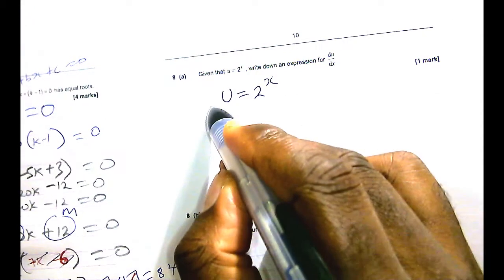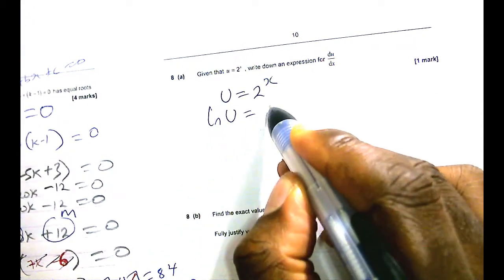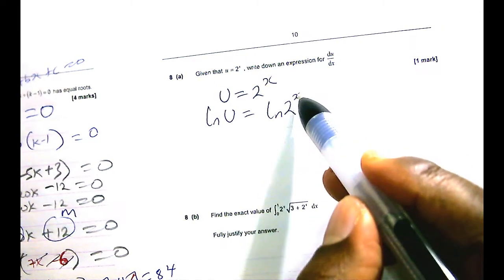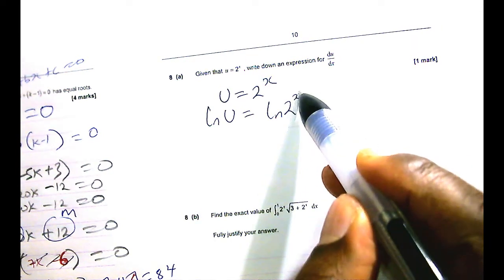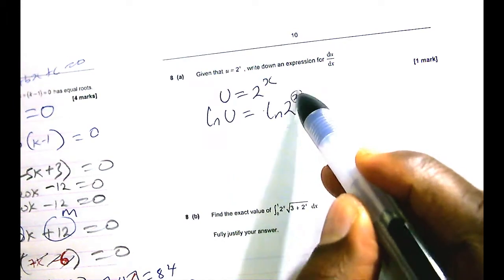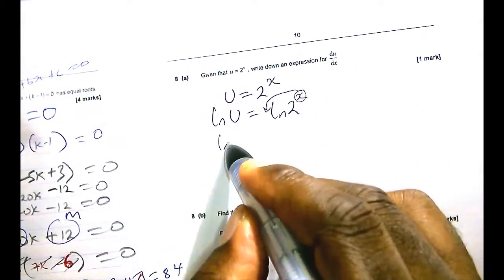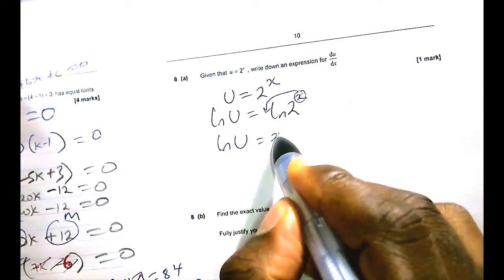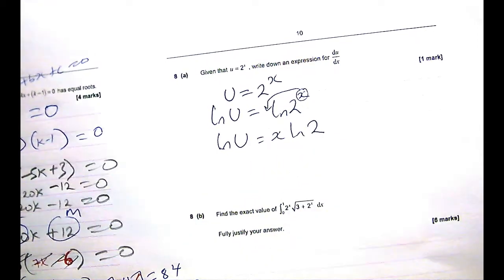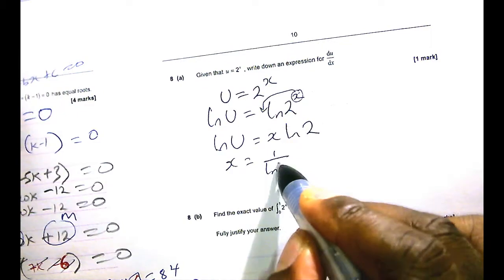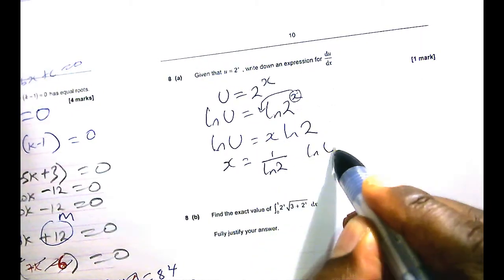So lin u equals lin 2 to the x. And you know the thing with logarithm is that whenever you have a power there, it goes to the front. It goes as a coefficient. So let this x go there. So we have lin u equals x lin 2. And with that, I can say x equals 1 over lin 2. And then we have lin u.